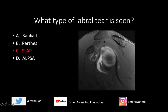A Bankart tear would be at the three to six o'clock position along the anterior inferior labrum — notice there's no contrast within the labrum along that quadrant, and it would be detached from the glenoid. A Perthes lesion would also be a labral tear at this location, but the labrum would still be attached to the glenoid process while completely detached from the underlying periosteum. An ALPSA lesion — anterior labral periosteal sleeve avulsion — would also be at the three to six o'clock position, but the labrum would be displaced inferiorly and medially while still attached to the underlying periosteum.